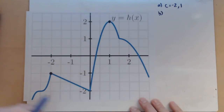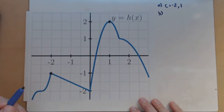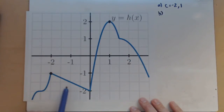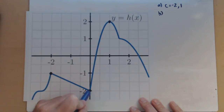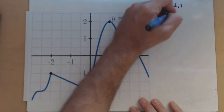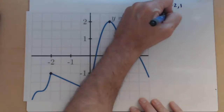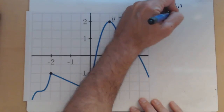Now we're going to do a local min — very similar, except now we're looking for a valley. Looking at this graph, it looks like there's only one, and that's right here at c equals 0.